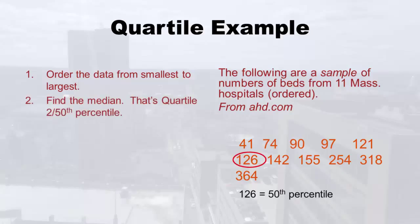Step two is to find the median — that's quartile two, or the 50th percentile. We have 11 hospitals, so the sixth one in the row is going to be the median, because it's an odd number. The sixth one — we'll circle it — that's the 50th percentile or the median, so we already got quartile two. I've color-coded these: 126 is the median, it's not on anybody's side. The orange ones are below the median, and the blue ones are above the median.